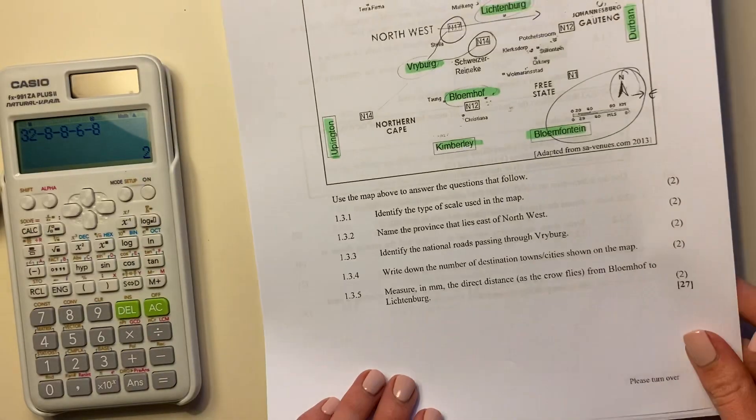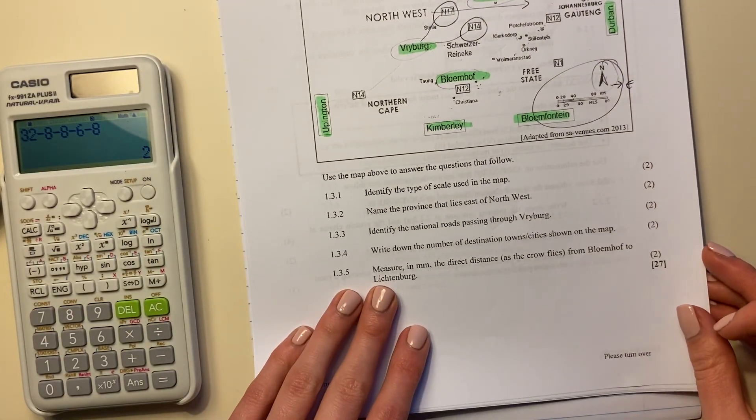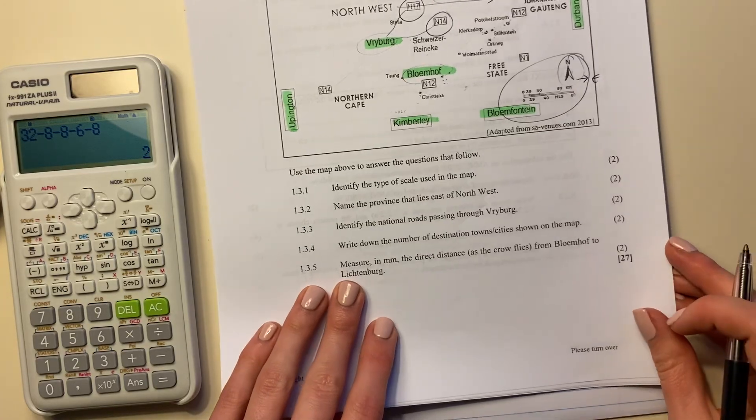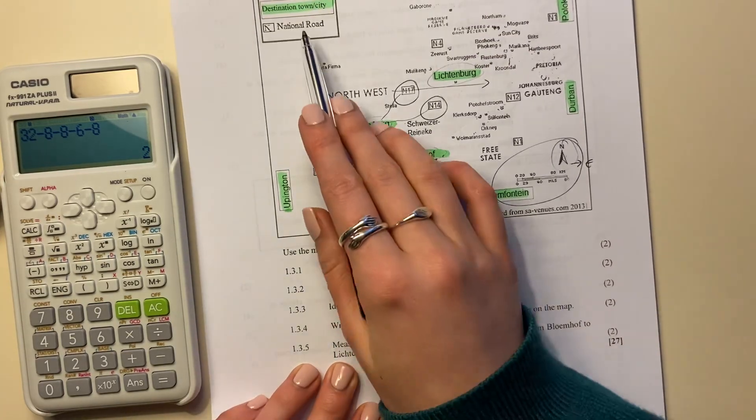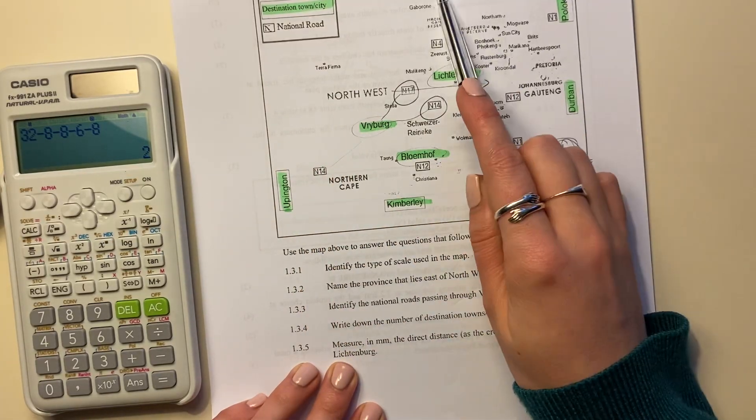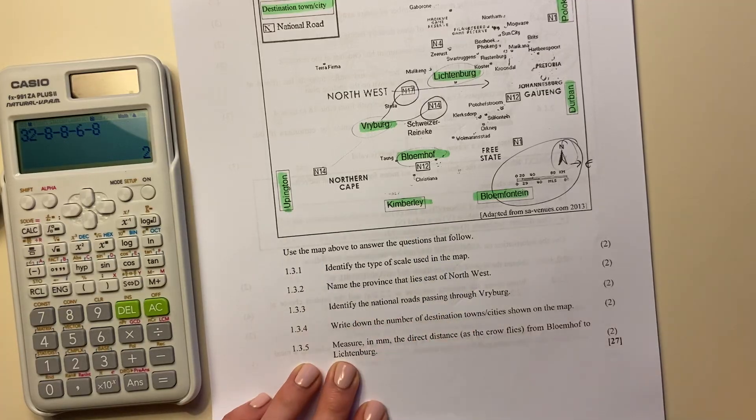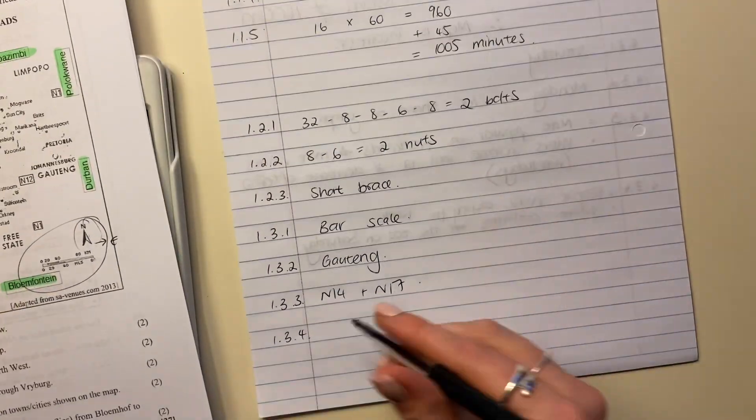Let's go to our second last question for this video. It says write down the number of destination towns or cities shown on the map. Now, remember I said they're the ones that have the little border around there. So let's count: 1, 2, 3, 4, 5, 6, 7. And that's your answer. Your answer is 7.